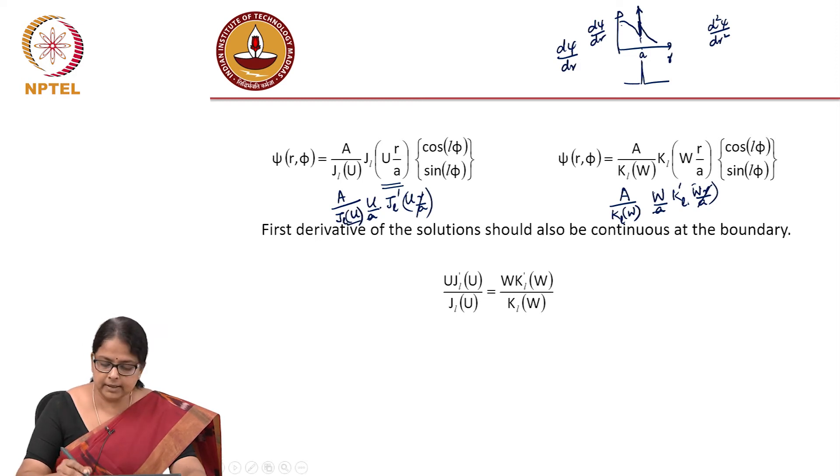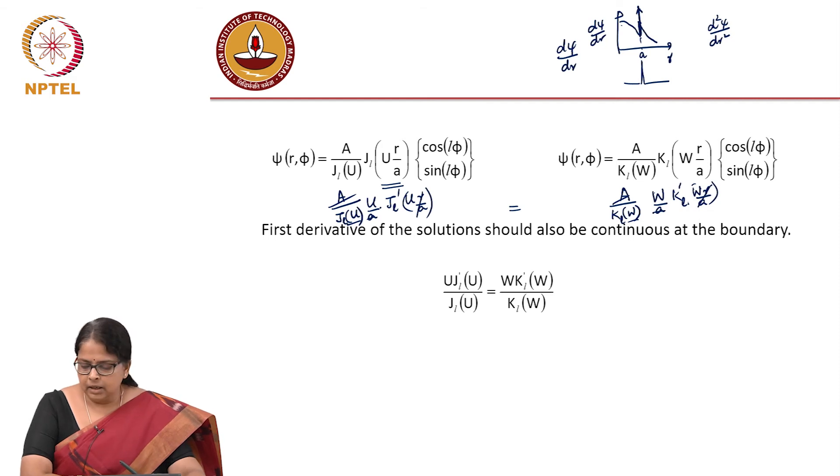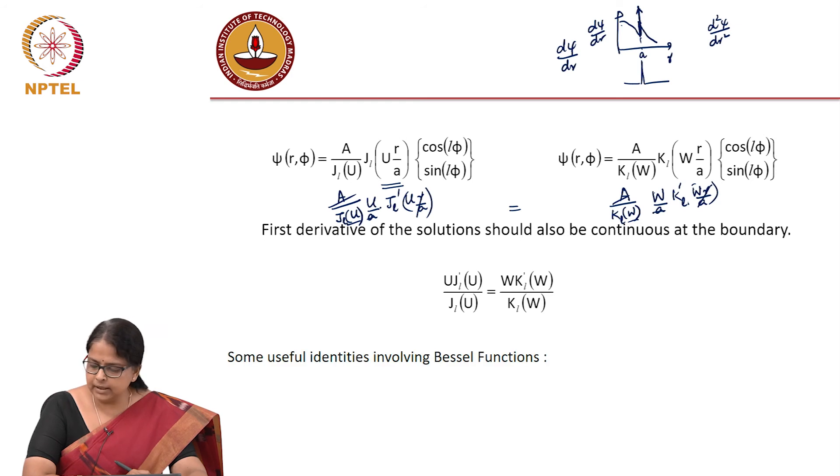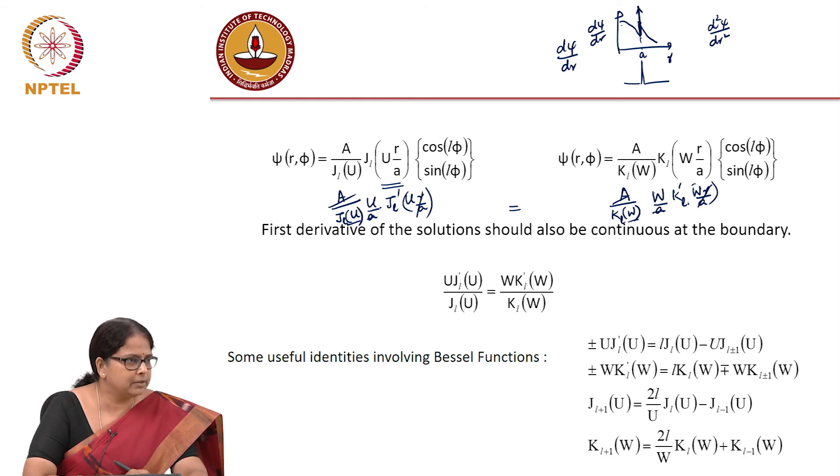Why am I treating all these as constants? They are all constants with respect to r. So if I try to equate this now, I will have A cancelling out, you have u times this and w times this in the denominator. Well, prime indicates first derivative. Now it is not very straightforward to make use of this if you do not know certain identities involving Bessel functions. So these are some useful identities with Bessel functions.